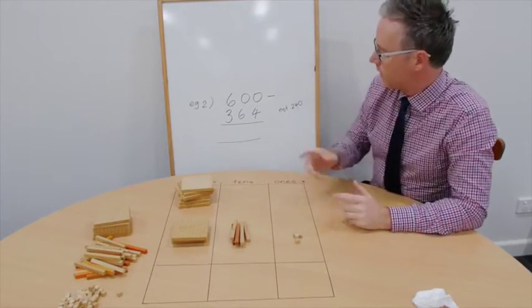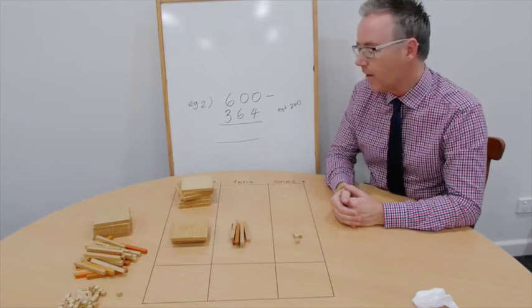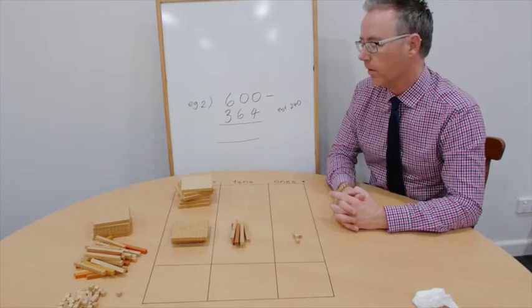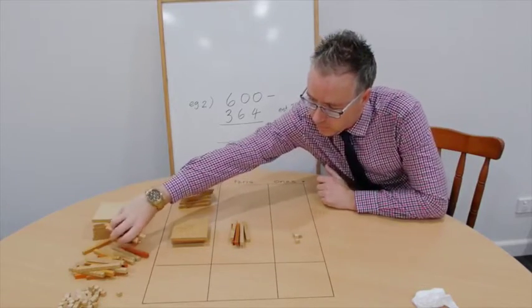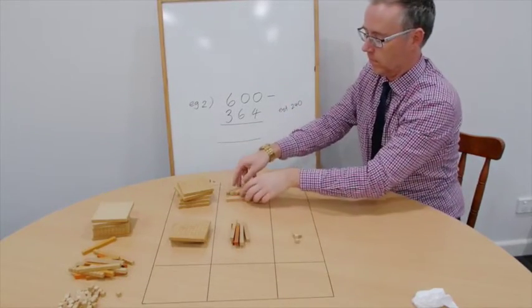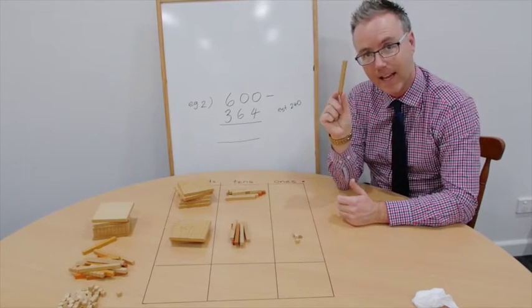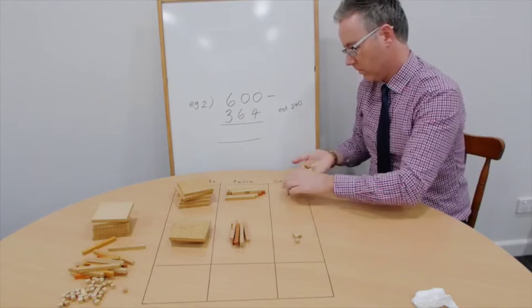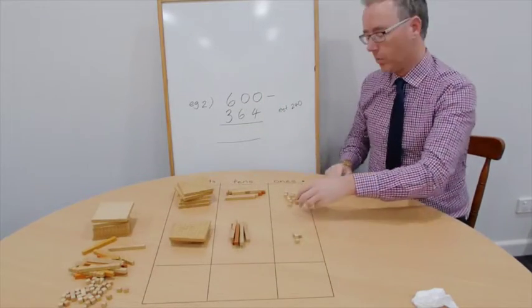Now the first thing we need to do is we need to say 0 take away 4. We can't do that. Now when it comes to borrowing, we can't actually borrow from the tens. So we actually need to do the process that I showed you in the first example twice before we can actually start working out this algorithm. So we need to trade 100 for 10 tenths. 7, 10. We still have the problem 0 take away 4. So I now need to trade a 10 for 10 ones. 4, 6, 8, 10.